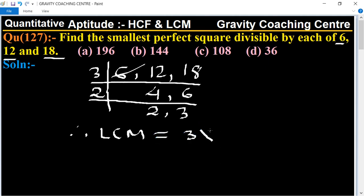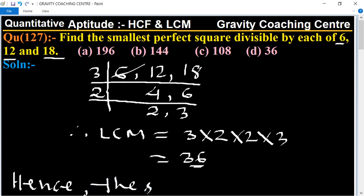3 multiplied by 2 multiplied by 2 multiplied by 3 equal to 36. So 36 is the square of 6, so it is already a perfect square. Hence, the smallest perfect square equal to 36.